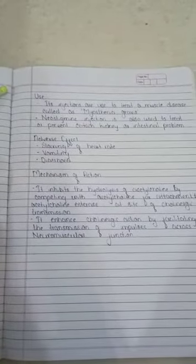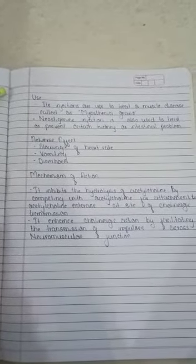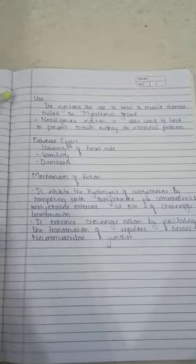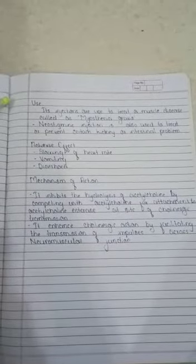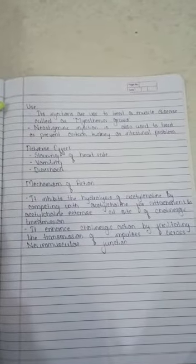Neostigmine injections are used to treat a muscle disease called myasthenia gravis. Neostigmine injection is also used to treat or prevent certain kidney or intestinal problems.